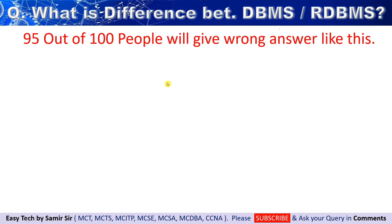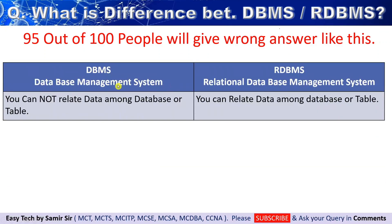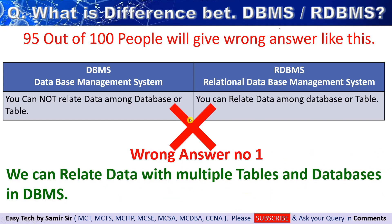When asked what's the difference between DBMS and RDBMS, 95 people out of 100 will give a wrong answer. They may say DBMS stands for Database Management Systems and RDBMS stands for Relational Database Management Systems, so in DBMS you cannot relate data among databases or tables, and in RDBMS you can. This is a wrong answer — we can very well relate data within multiple tables and databases in DBMS, not only within one database but among multiple databases too.